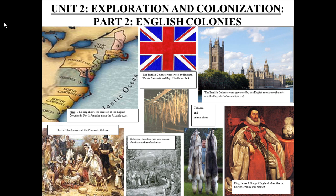English Colonies are the colonies that we're going to study here. On the front you can see some reasons why the English came here to colonize, some very important people and important places. As you can see in the map here, we have New York, the British flag — the Union Jack. This is the English Parliament, and then there's King James I. Some reasons for colonization: skins, tobacco, religious people, and then Native Americans and the first Thanksgiving at the Plymouth Colony.